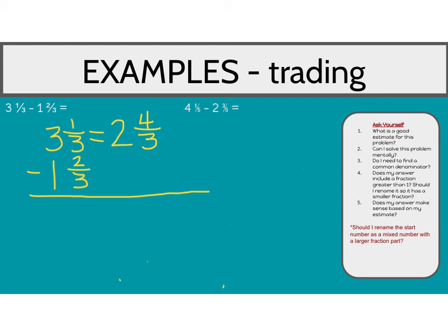And then we're going to transfer over that one and two-thirds because it does not change. Now we're going to subtract: four minus two is two-thirds. Then we subtract our whole numbers — two minus one is one. And there you have it. Our answer to that first example is one and two-thirds.